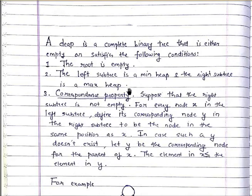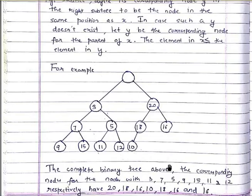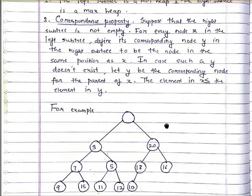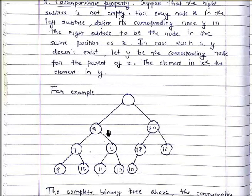The third and final condition is the correspondence property. Suppose the right subtree is not empty. For every node x in the left subtree, define its corresponding node y in the right subtree to be the node in the same position as x. So for every node x in the left subtree, there will be a corresponding node y in the right subtree.